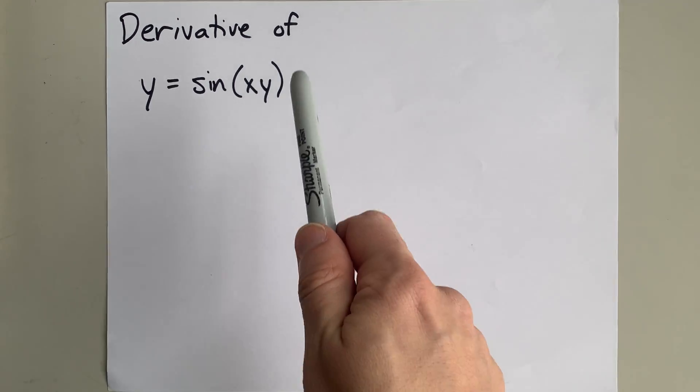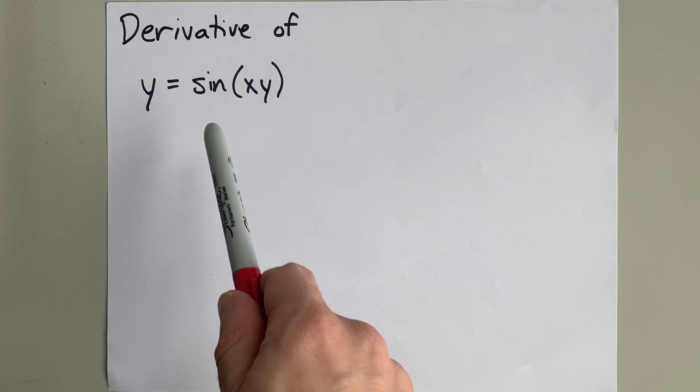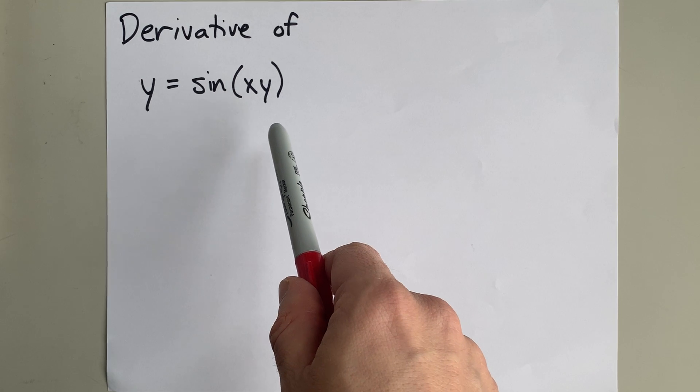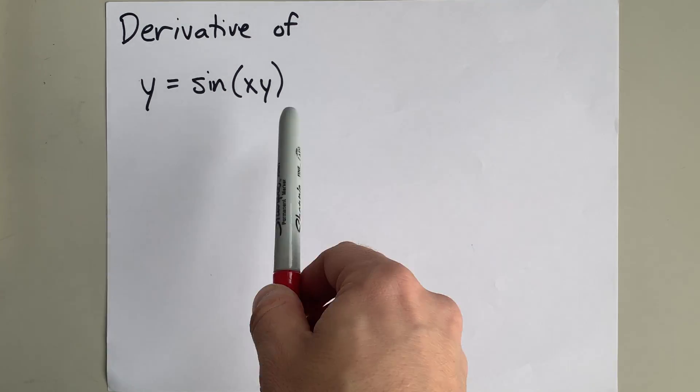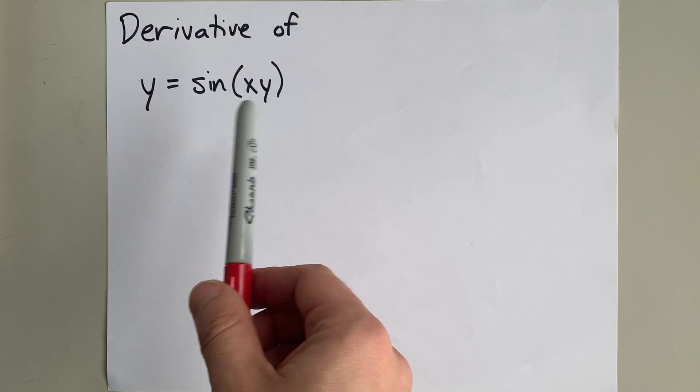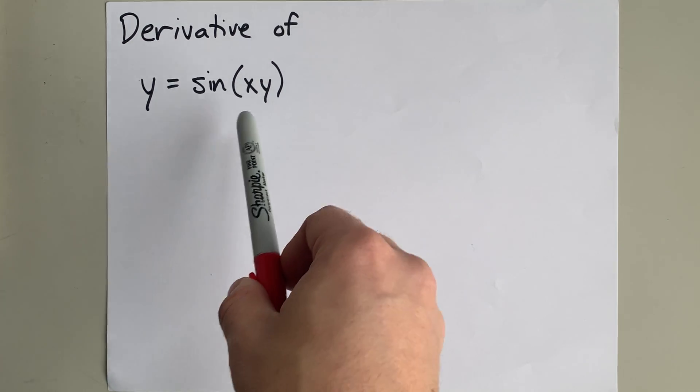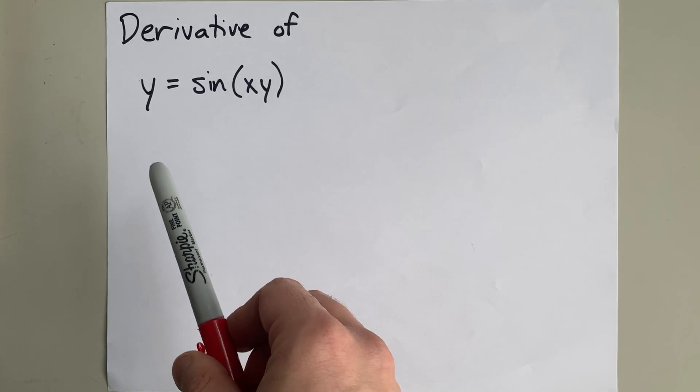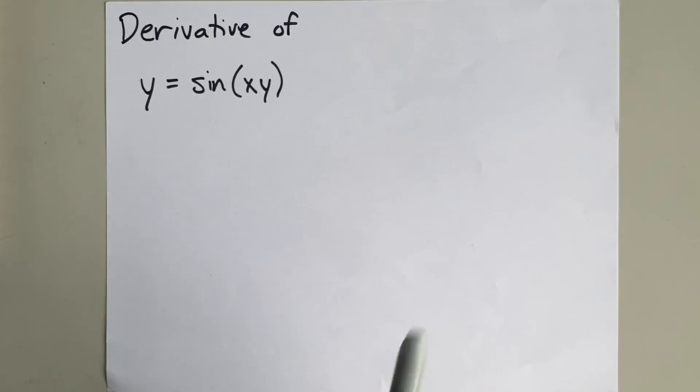We're going to take the derivative of y equals the sine of xy. Because we have a y on both sides of the equation and we can't combine them—one's inside a trig function and one isn't—we're going to need implicit differentiation.